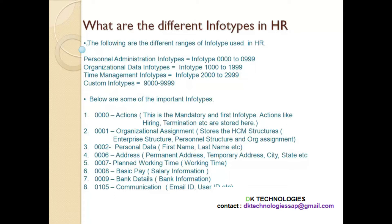What are custom info types? In case a company is looking for an info type to meet its requirement — for example, they need an info type for some purpose they cannot find in the standard ranges SAP has provided — then they go to the custom range 9000 to 9999 and create their own info type. Any info type starting with 9 is a custom info type, meaning the company has designed it for its own purpose and SAP has not delivered it.